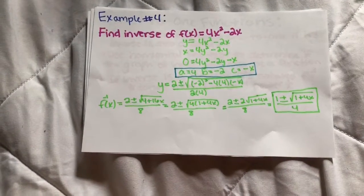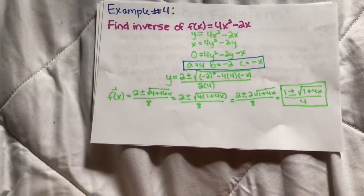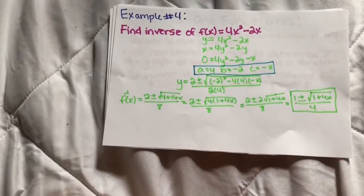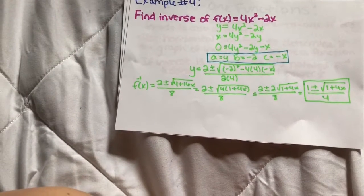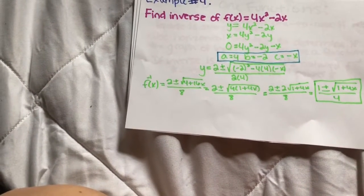Example number 4. Find the inverse of f(x) equals 4x² minus 2x. The same steps apply. Change f(x) to y, then switch x and y and end up with x equals 4y² minus 2y.